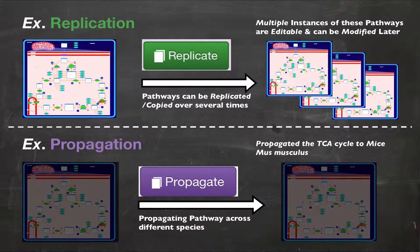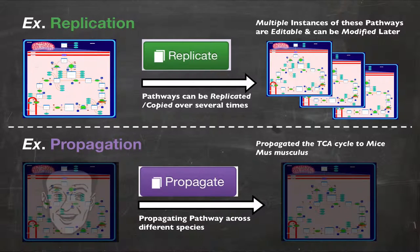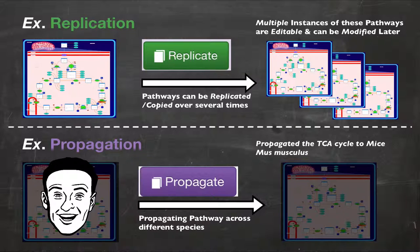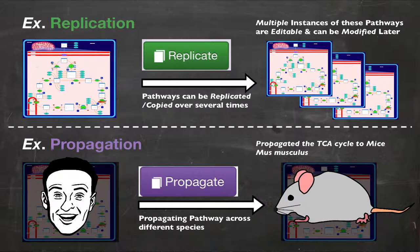In other words, a pathway that was drawn for one specific species, say human, can be automatically copied and modified with all the enzymes, transporters, and other features for another species, say mouse.